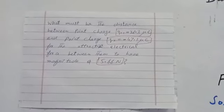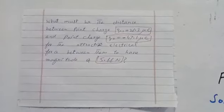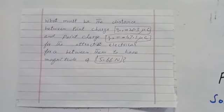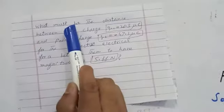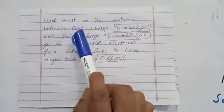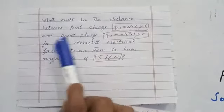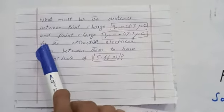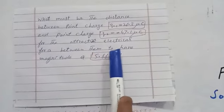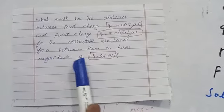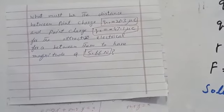Bismillahirrahmanirrahim. The numerical problem we are going to solve is: what must be the distance between point charge Q1 and point charge Q2 for the attractive electrical force between them to have a magnitude of 5.66 newtons?